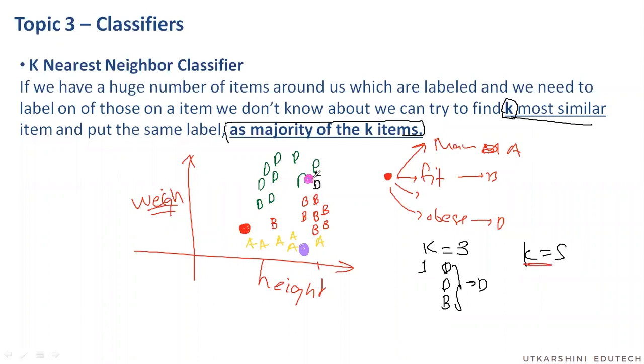So now if I take the value of K equals to 5, the 5 nearest points will be this, this, this, this, and this. So now it will be B, B, D, D, D, so just by changing how many points I'm considering to make a decision, I have more number of B now. So I have classified the same point as fit.